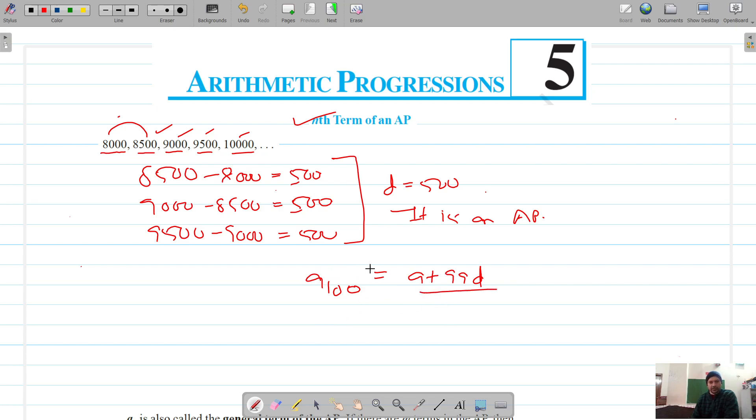So how did we arrive at this? The formula or the situation is: this is n, so this is one less than n. This is our first term and this is n minus 1 into d. That's how we arrived at this formula. We know that if you have to find the hundredth term, this has to be 99 times the common difference that is added to the first term.